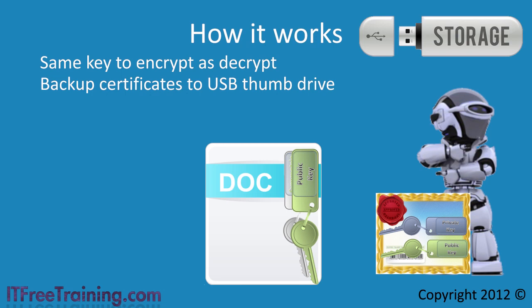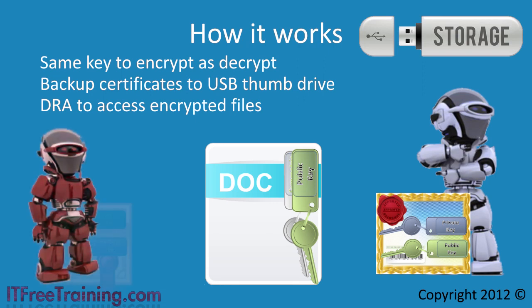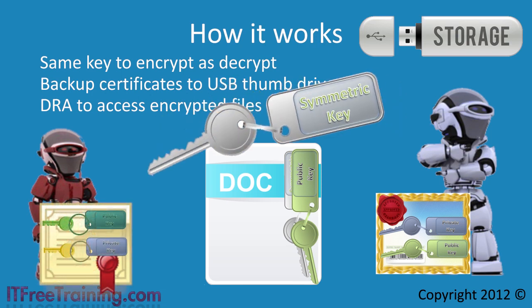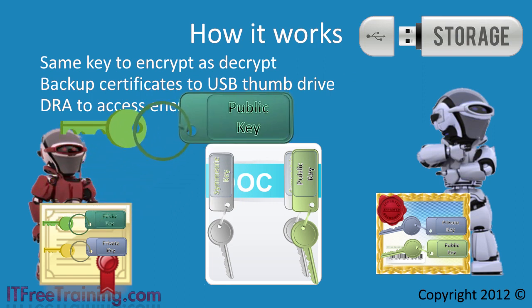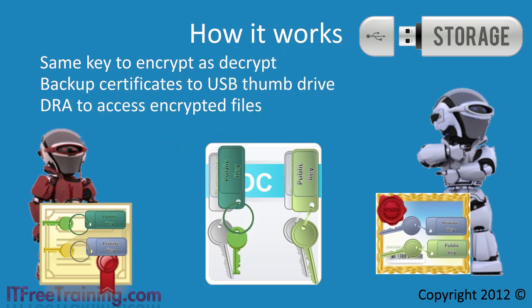The second thing you can do is create what is called a data recovery agent. A data recovery agent is a second user that has access to the file. To make this work, EFS places a second copy of the symmetric key in the file, and this is encrypted with the data recovery agent certificate. Now you have two users who can get access to the key when required. If more users need to access the file, you can add more keys to the file, encrypted using each user's certificate.